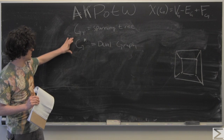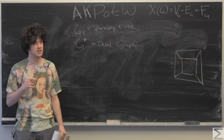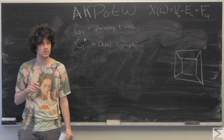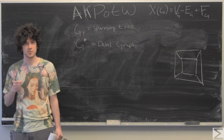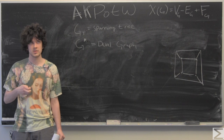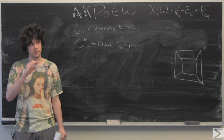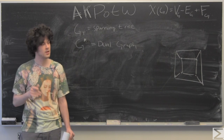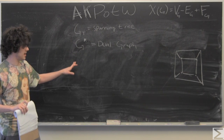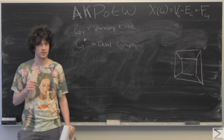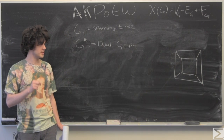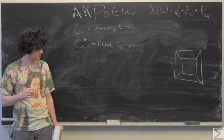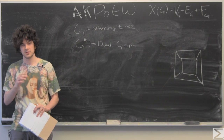We're also going to be talking about spanning trees and dual graphs. A spanning tree is any subgraph G_T of a graph G such that every vertex is connected with a minimal number of edges. Spanning trees are connected and have no loops, because a loop would be a superfluous edge. A dual graph G* is constructed from G by adding a vertex at the center of each face, with edges connecting vertices through the edges that connect the faces.